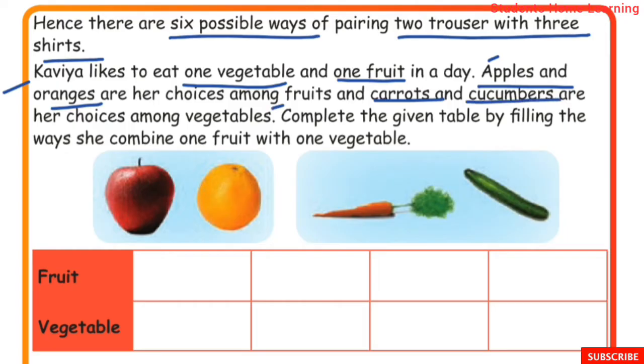Complete the given table by filling in the spaces. She combines 1 fruit with 1 vegetable each day.